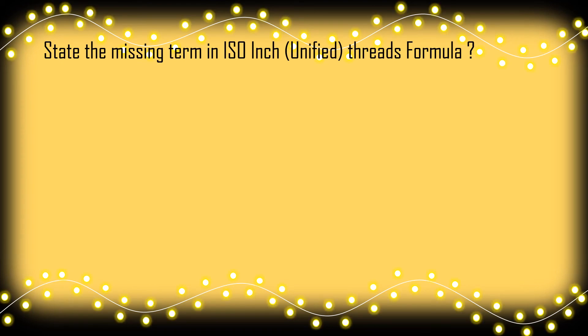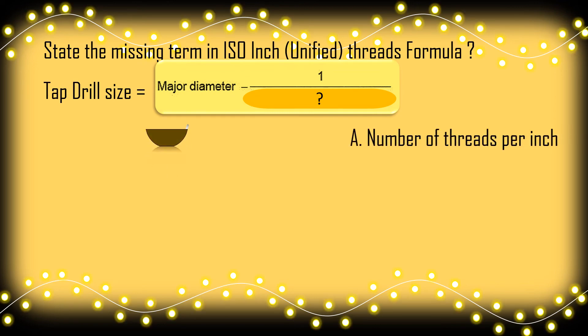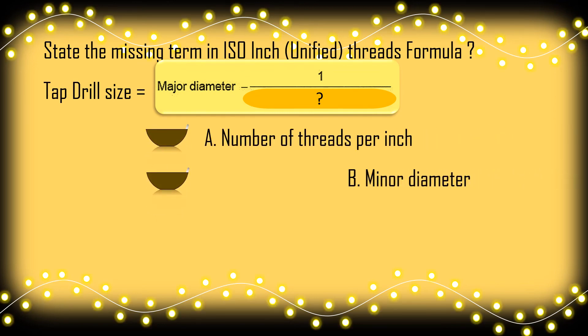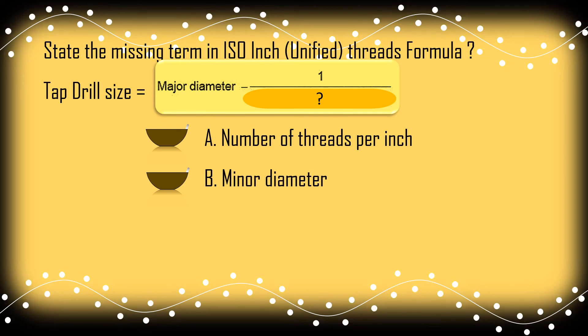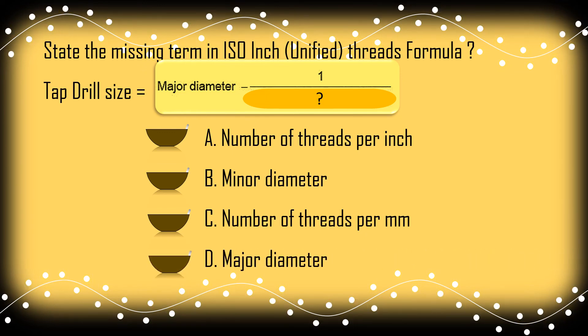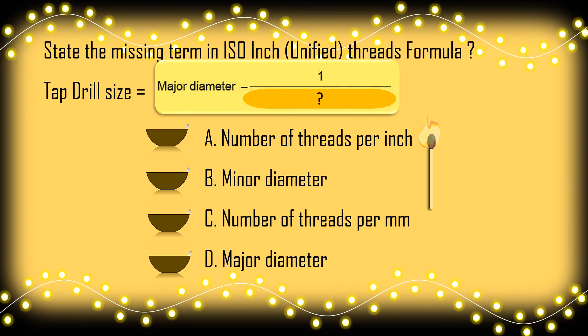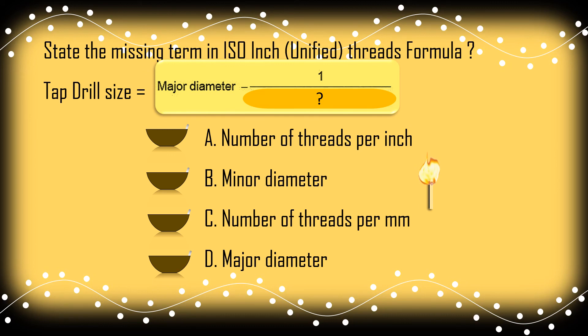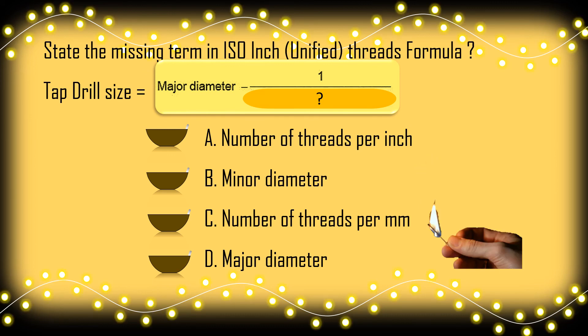Let's try question session for this topic. State the missing term in ISO inch unified threads formula given below. Option A: Number of threads per inch. Option B: Minor diameter. Option C: Number of threads per mm. Option D: Major diameter. Try to answer the following question before this matchstick burns out fully. Congrats, I think you are right. Let's light the lamp of correct answer. Option A: Number of threads per inch.